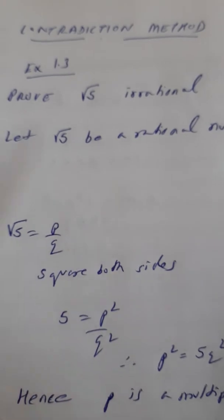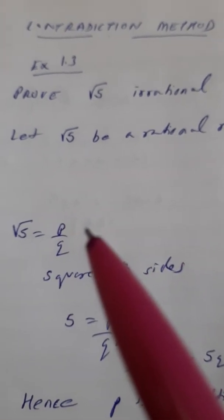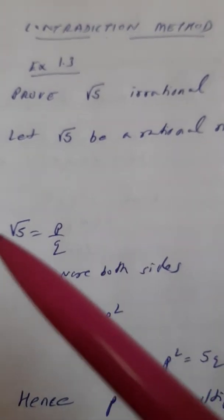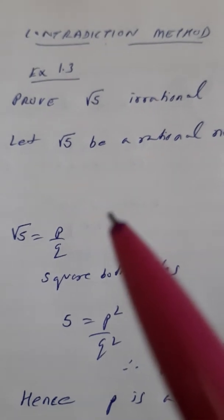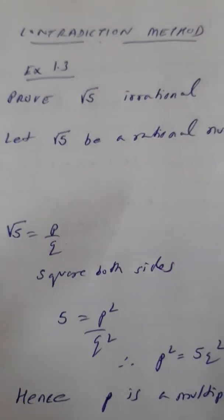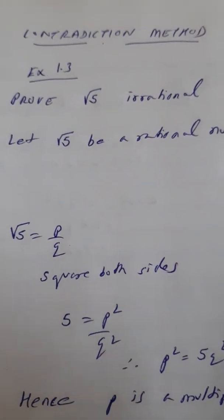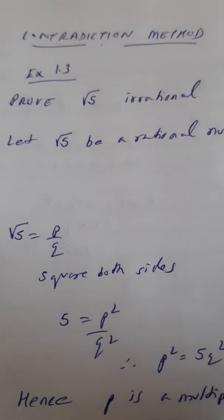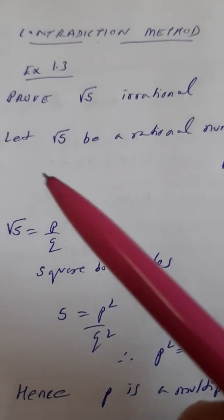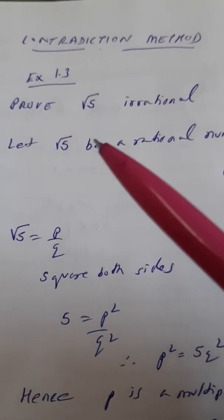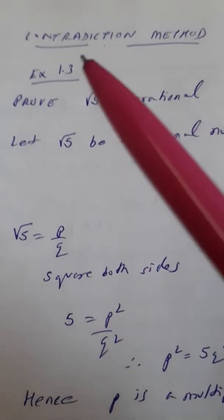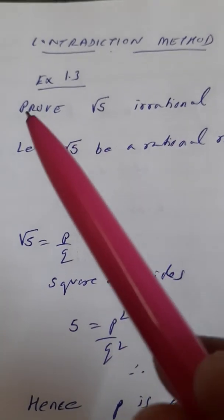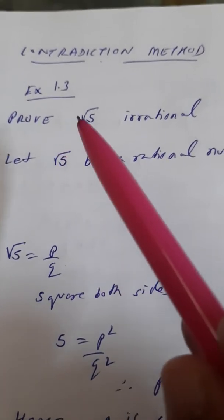Same way, suppose we want to prove something. For example, if I want to prove that I'm using a pen, I'll use an indirect proof. There are two writing instruments—it's either a pencil or a pen. If I'm able to prove this is not a pencil, then obviously the result is that this is a pen. So that's the contradiction method. Same way here mathematically, now prove that root 5 is an irrational number.